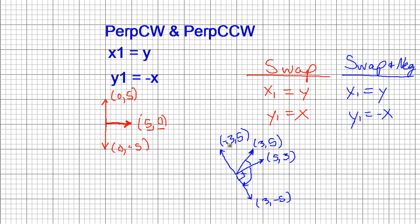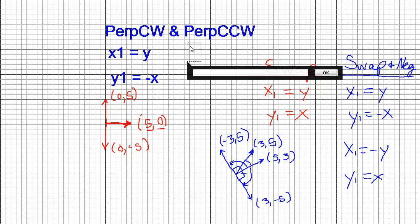But we're going to negate the new x coordinate. So this one's for clockwise, and this one's counterclockwise. And again, it's 90 degrees. So our new x in this case is equal to negative the old y, and our new y equals the old x. So there's our perp CCW rule.